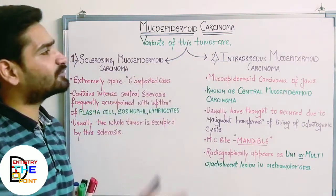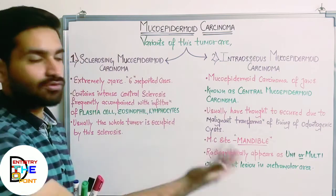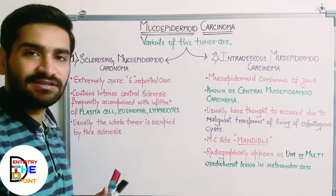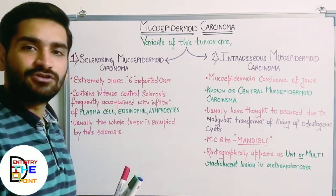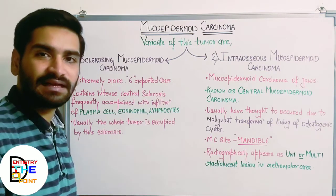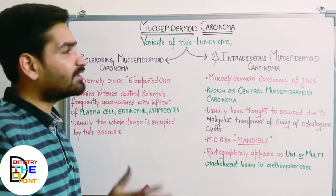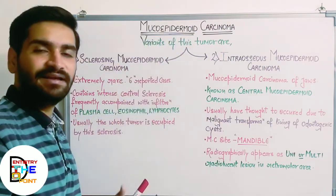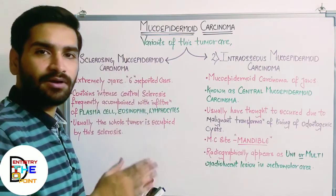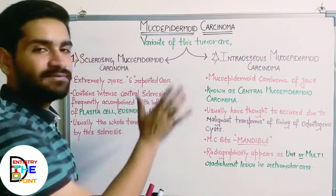These are considered variants because they show features different from conventional mucoepidermoid carcinoma, which occurs in the major and minor salivary glands and may appear as extraoral or intraoral lesions. This has been discussed in detail in part 1 and part 2 of the mucoepidermoid carcinoma video on this channel.